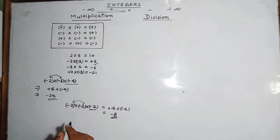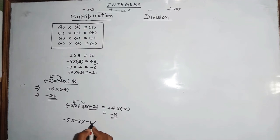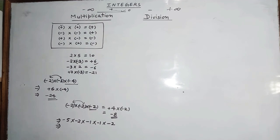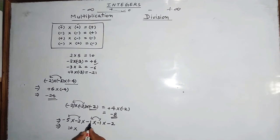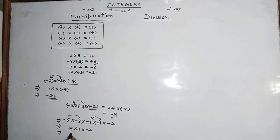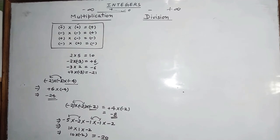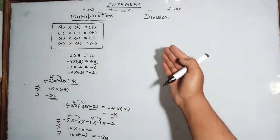For minus 5 into minus 2 into minus 1 into minus 1 into minus 2: multiply minus 5 into minus 2 — 5×2=10, minus into minus gives +10. Then minus 1 into minus 1 — gives +1. Then +10 into +1 gives 10. Finally, 10 into minus 2 — 10×2=20, plus into minus gives minus 20. So the answer is minus 20.